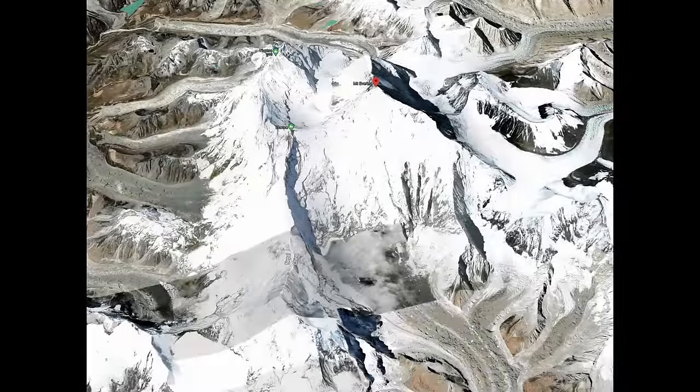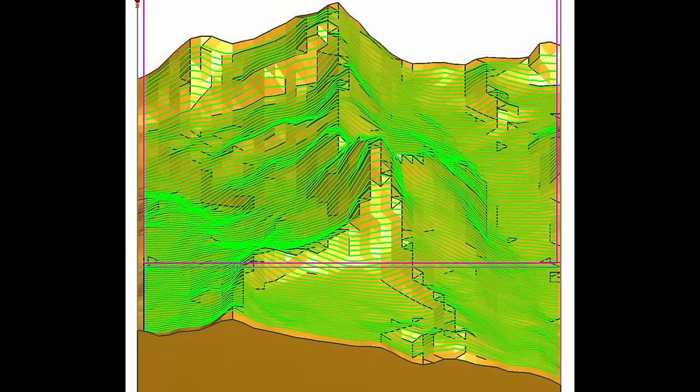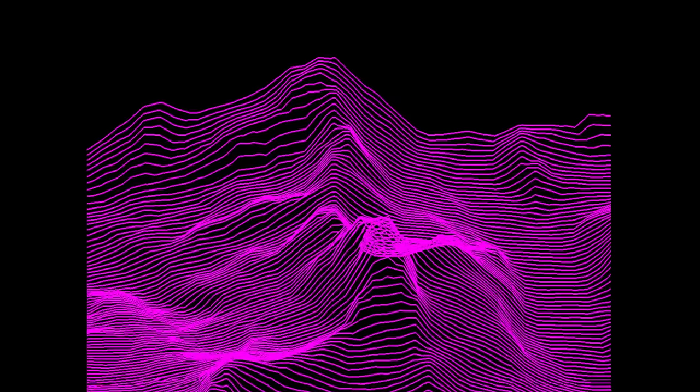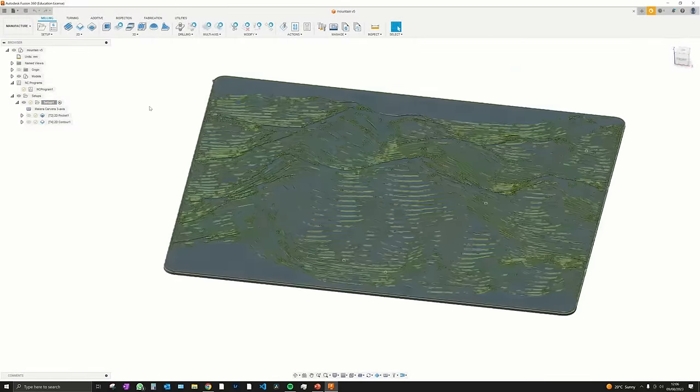I basically downloaded an STL file of some mountains and then projected some lines in the X direction, then exported those lines as vector graphics and cleaned them up in Illustrator until they looked nice. I exported the vector as a DXF and then brought it into Fusion to make a 3D model out of it.